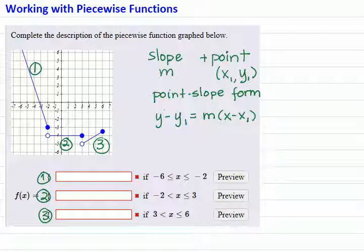So if I solve for y, I will just add y₁ to both sides. And the equation is y equals m times x minus x₁ plus y₁.